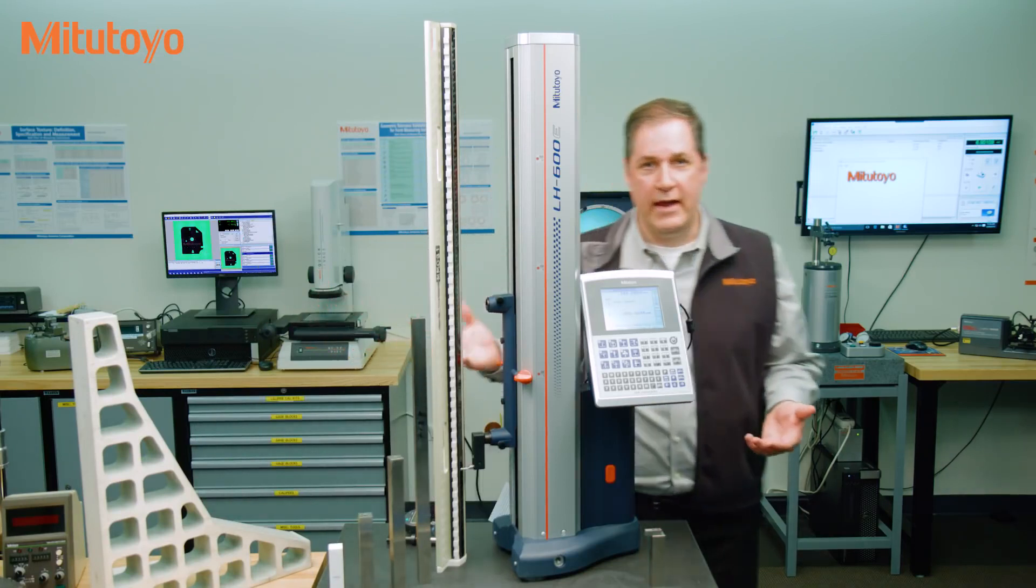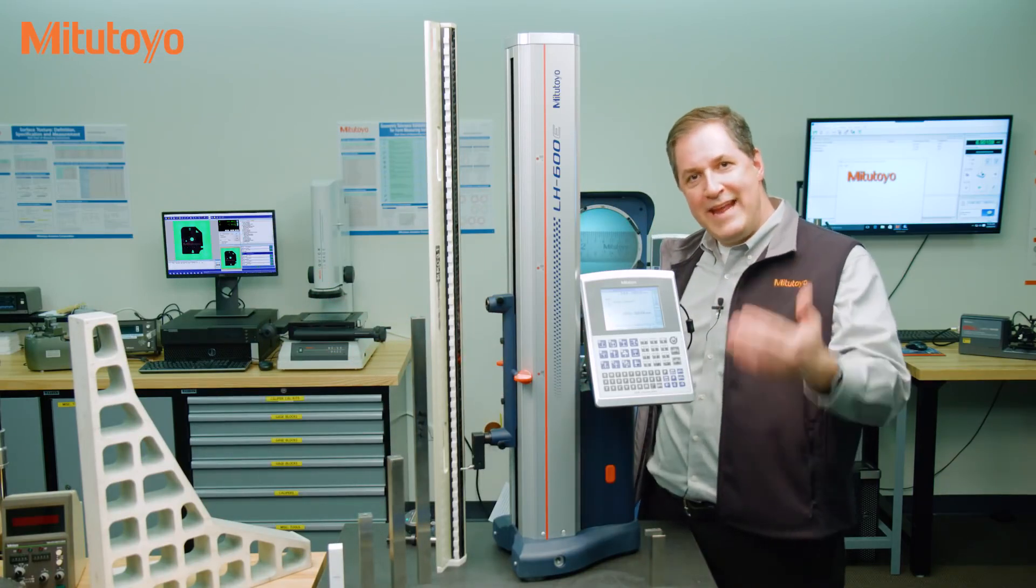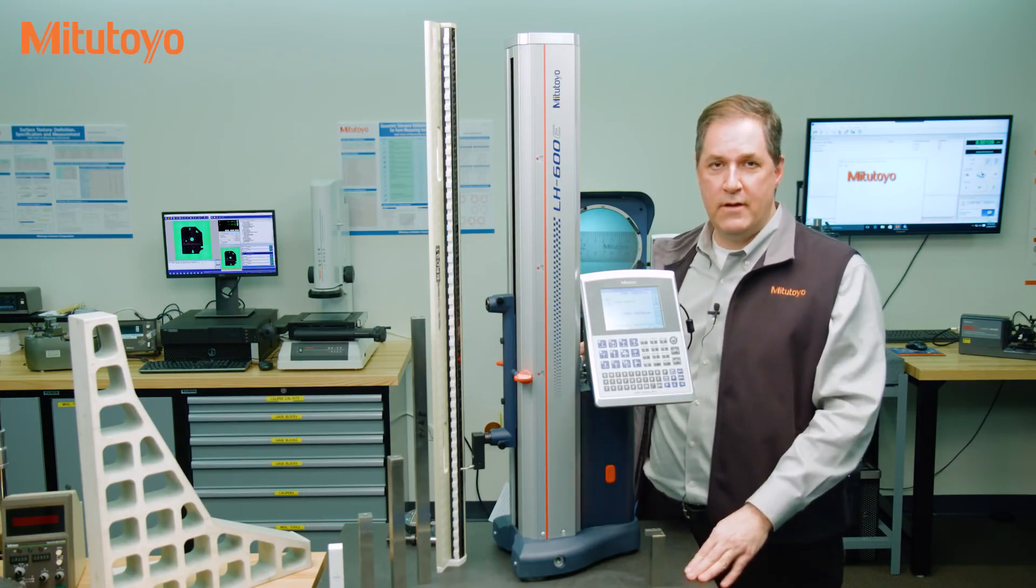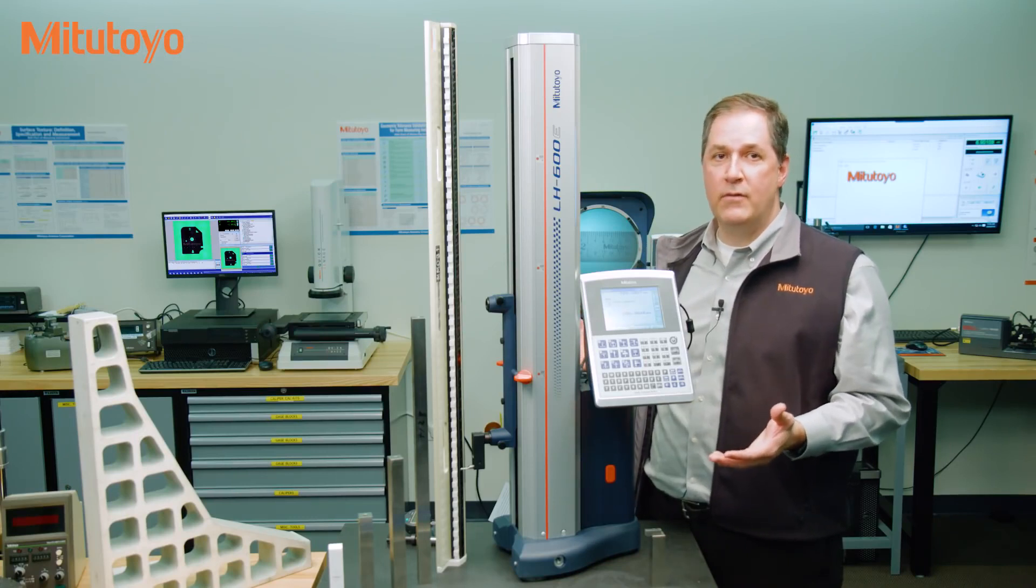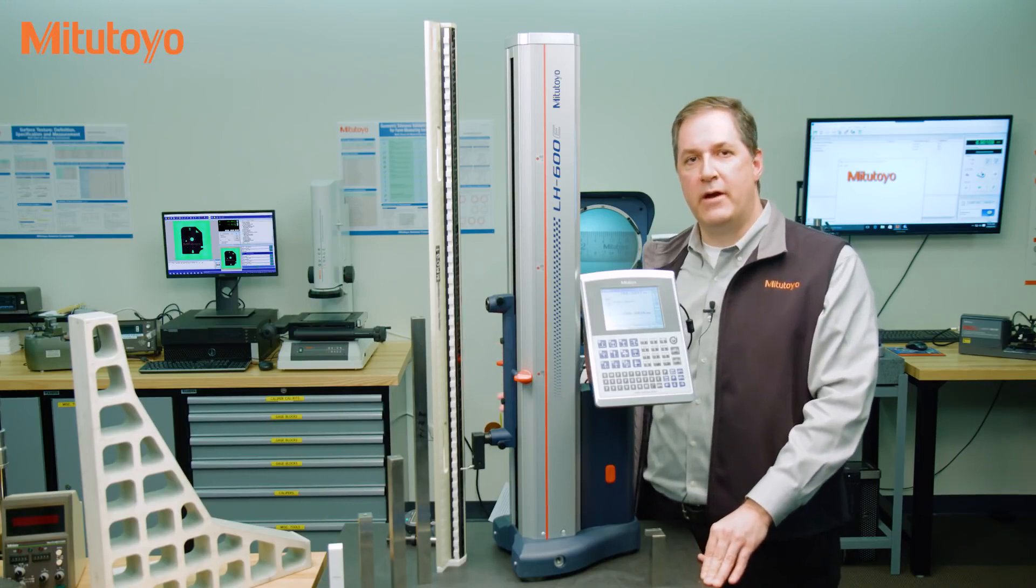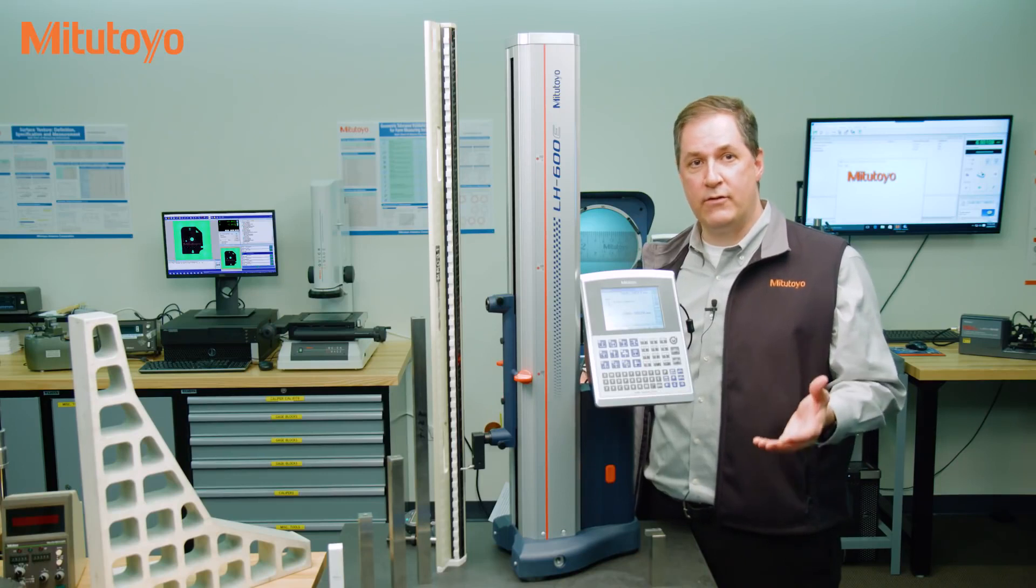So, as the manufacturer of the height gauge, we can give you some advice on the calibration. But the ownership of what needs to be calibrated belongs to you, the user of the measuring equipment. And with today's sophisticated measuring equipment, this is a real problem. Organizations are often not getting the right things calibrated, which can waste money, or even worse, expose your organizations to risks associated with quality.